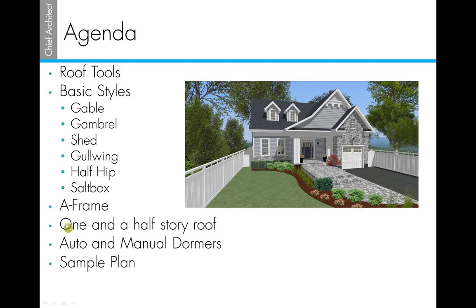Before we get started, let's run through our agenda. We're going to start off by running through our roof tools and how you can build a roof using both the Build Roof dialog box and through controlling your walls. We'll then design a couple of basic roof styles starting with a gable and moving on to a gambrel, a shed, a gullwing, a half hip, and a salt box roof. We'll then design an A-frame roof and a one-and-a-half story roof. Next we'll run through both the auto and manual dormer tools, and then apply all the concepts towards a sample plan.